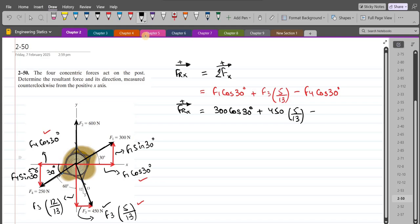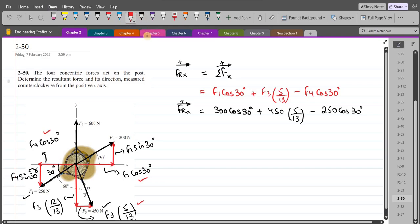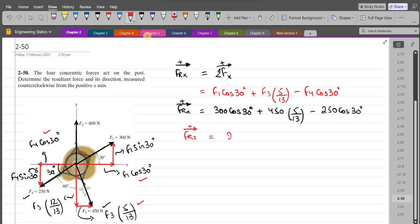Minus F4, which is 250 Newtons, so 250 times cos 30. So FRx becomes 216.4 Newtons.